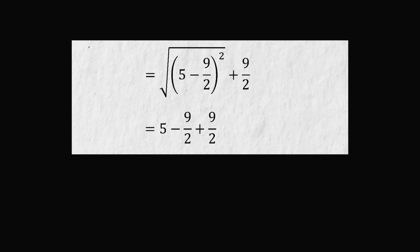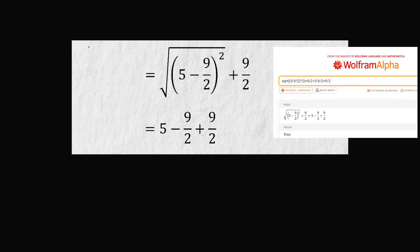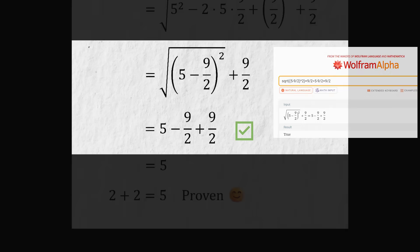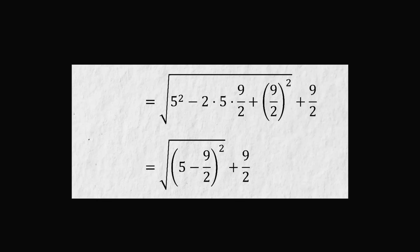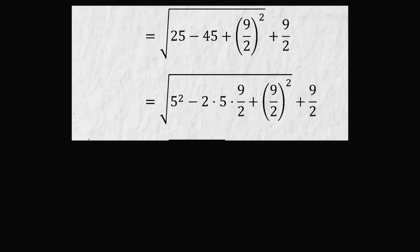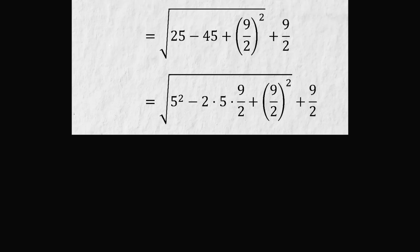Going one line up: is it true that the square root of the square of (5 minus 9 over 2) simplifies to 5 minus 9 over 2? Yes — this step is in fact true, not where the mistake is. Continuing upward, the steps involve factoring, arithmetic like 4 squared equals 16, 2 times 4 times 9 over 2 equals 36, and rewriting 25 as 5 squared and 45 as 2 times 5 times 9 over 2. All these steps check out.